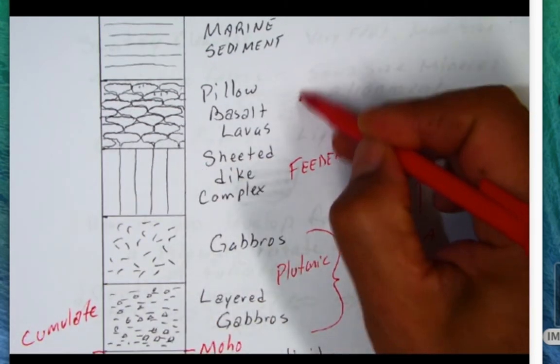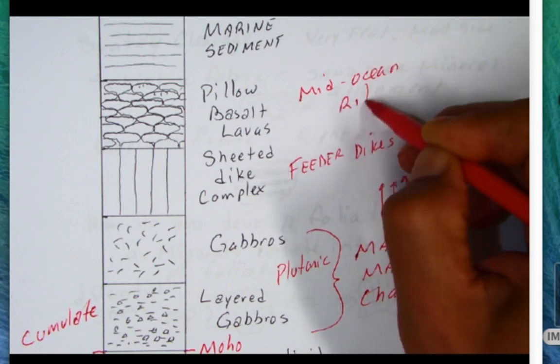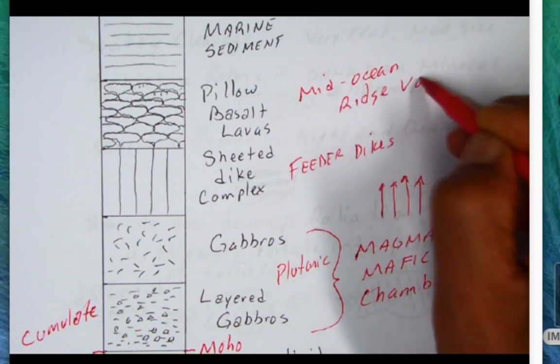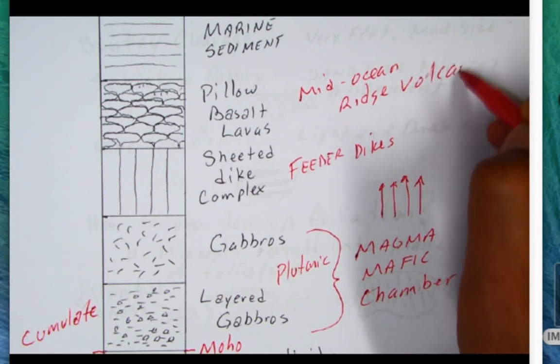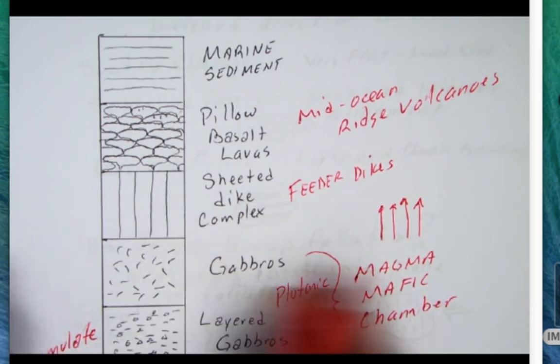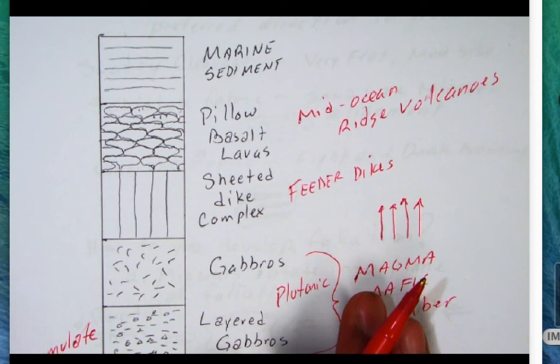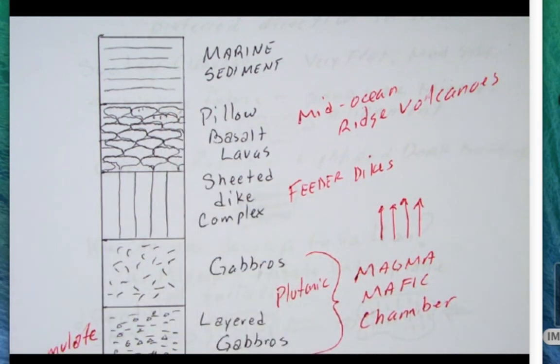These are the mid-ocean ridge volcanoes. When the hot magma erupts onto the sea floor, it gets quenched by that cold seawater. Finally, at the very top of the sequence, as sea floor spreading is moving this away from the mid-oceanic ridge, marine sediment will collect on top.